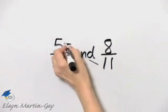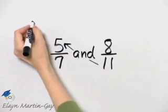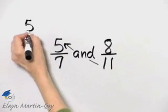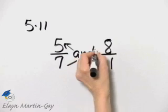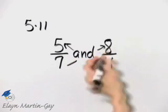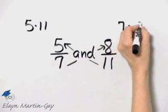So let's look at this cross product. That's 5 times 11. And what is this cross product? That's 7 times 8.